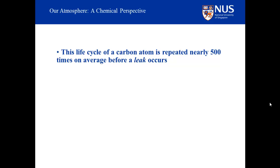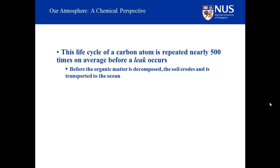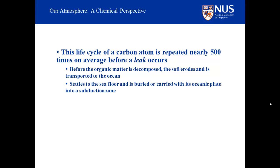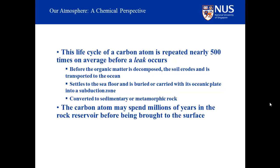This life cycle of a carbon atom is repeated nearly 500 times on average before a leak occurs. Once in a while, before the organic matter that contains the carbon atom decomposes, the soil erodes and is transported by rivers to the oceans. There it settles with other particles to the sea floor and is buried by subsequent sediments, or carried with its underlying oceanic plate deep into the subduction zone. Under elevated temperatures and pressures, the carbon atom may be converted into gaseous carbon atoms and escape to the surface, or be converted into the components of sedimentary or metamorphic rock. The carbon atom may spend millions of years in the sedimentary or metamorphic rock reservoir as mountain belts form, thrusting deeply buried rocks through the Earth's surface and beyond to great elevations.